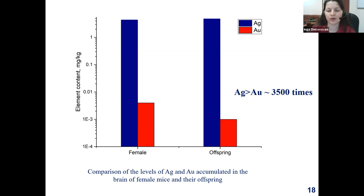The results are rather interesting because the accumulation of silver was significantly higher — approximately 3,500 times higher than in the case of gold nanoparticles. So even though we cannot prove at the moment that there are no toxic or dangerous effects of these gold nanoparticles, the low accumulation of gold nanoparticles in organs — including the brain — shows us that gold nanoparticles can be applied for biomedical purposes, for example for cancer treatment and some other proposals for which they are currently used and will be used in the future.